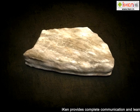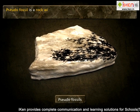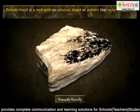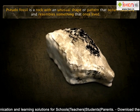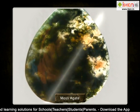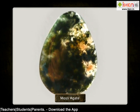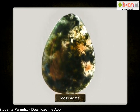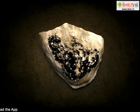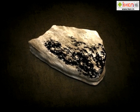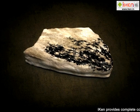Pseudofossils form another type of fossil. A pseudofossil is a rock with an unusual shape or pattern that occurs naturally and resembles something that once lived. Moss agate is an example — it looks exactly like moss or plant leaves. Pseudofossils are produced due to geological processes and may be formed or exposed by erosion or weathering, which is a chemical process that can alter a rock's appearance.